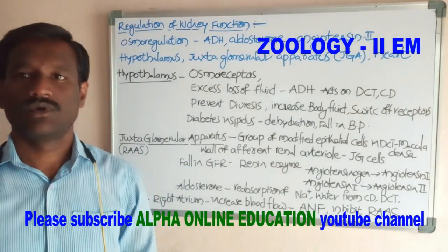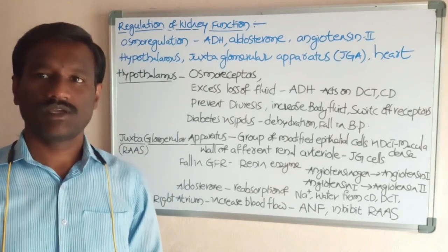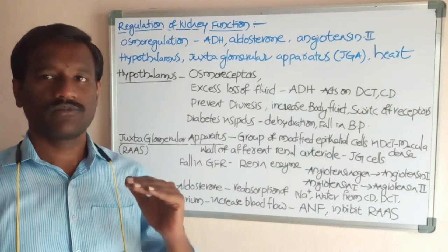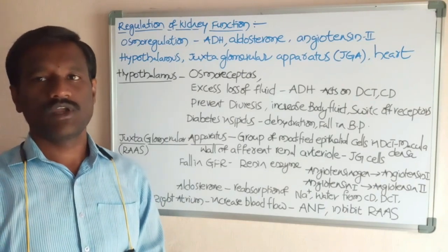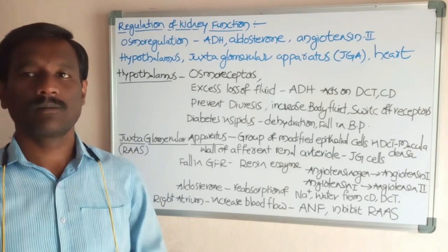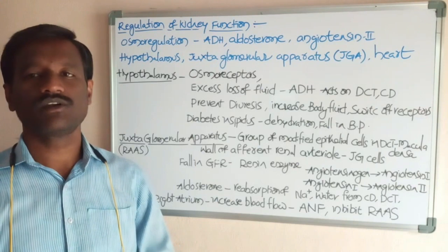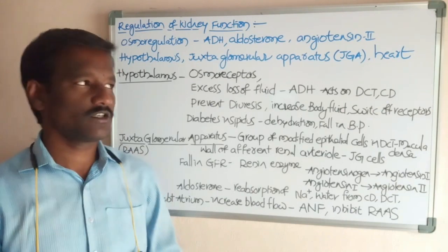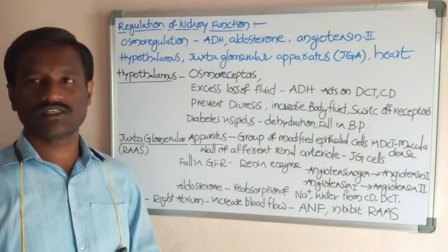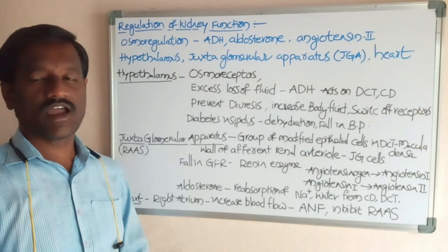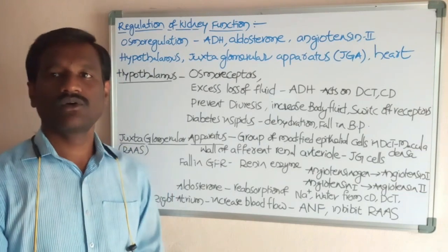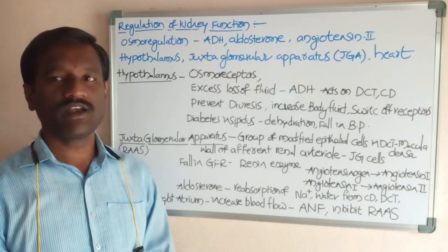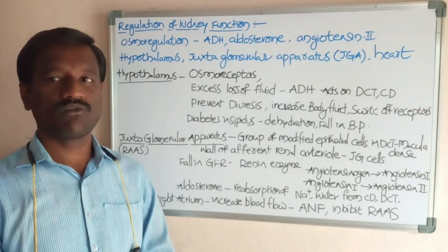Hello students. Today's discussing topic is regulation of the kidney function. The kidney excretes different types of excretory products, excess amount of water and ions in the body. The body fluids are excreted outside through the excretory structures of human beings. Osmoregulation means maintenance of the body fluids and water content.